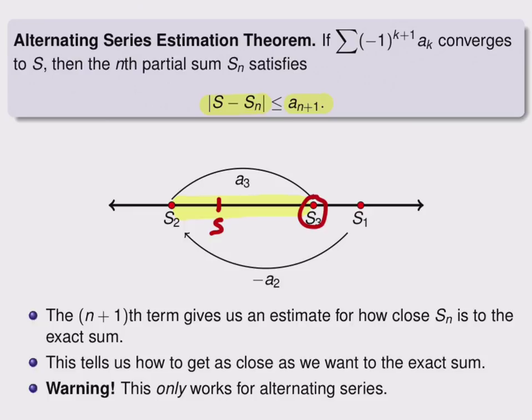This tells us that the n+1th term gives us an estimate for how close our partial sum is to the real sum, and it tells us how to get as close as we want to the exact sum.